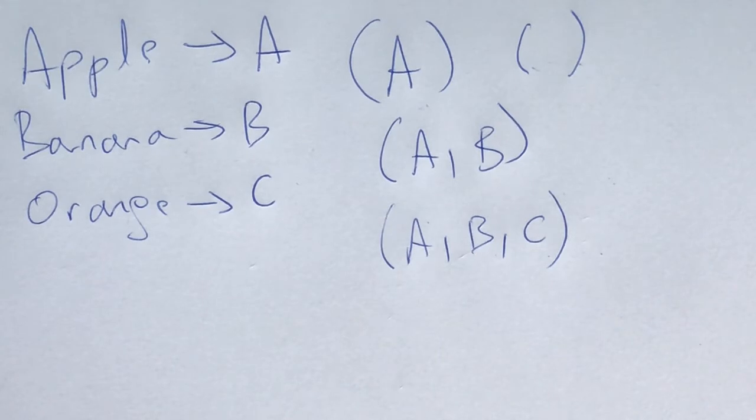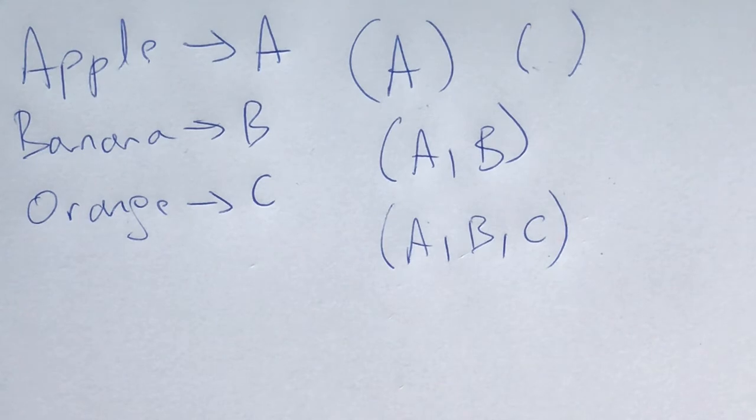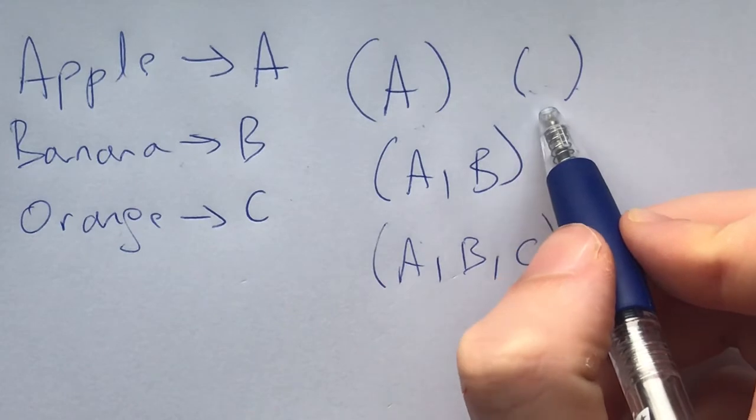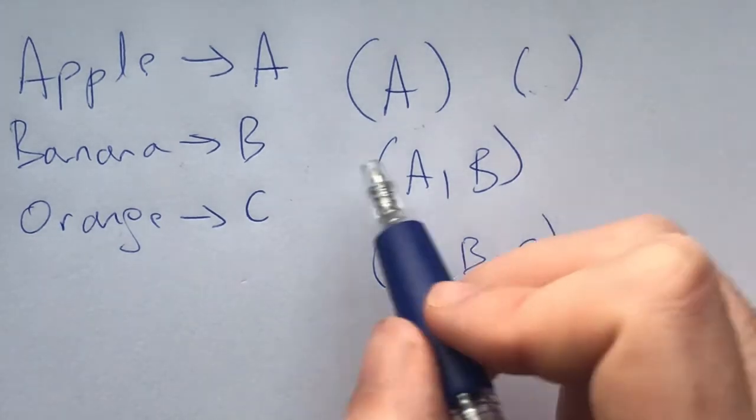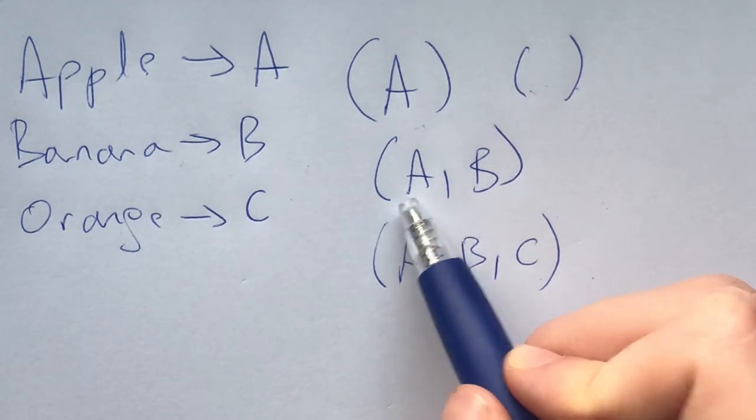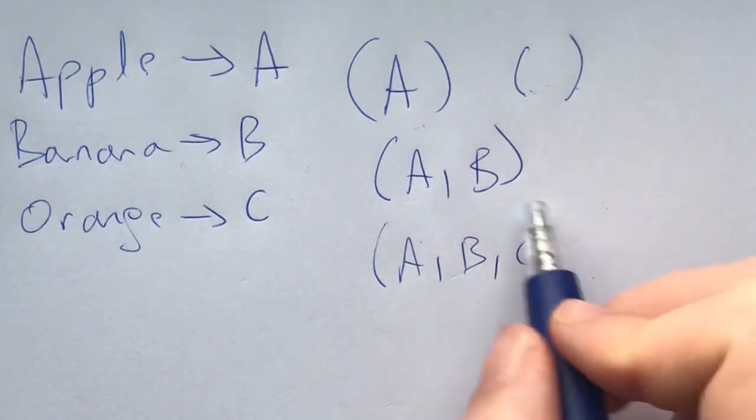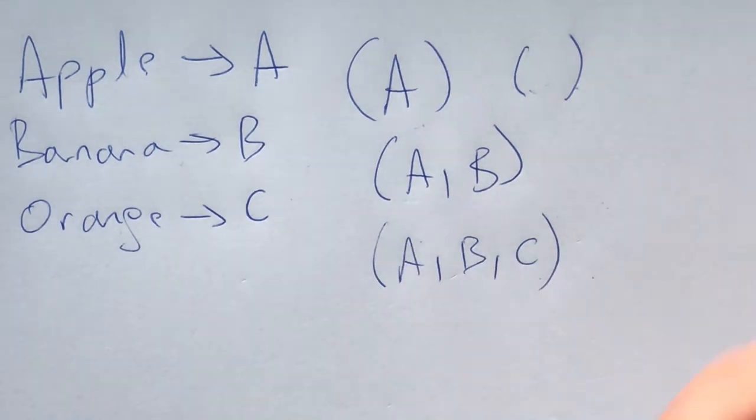Before we play around, let's get clear on a common language. I will be denoting apple by A, banana by B, and orange by C. If Alice is presenting Bob with an empty basket, I'll denote it like this. If it has an apple inside, I'll denote it like this. Apple and banana like this. Apple, banana, and orange will be denoted like this, and similarly for other combinations.